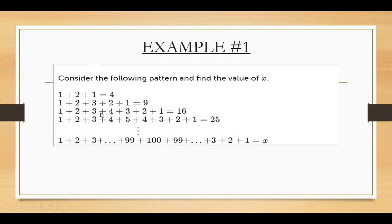Similarly, for the third line, the biggest number in the center is 4, so the square of 4 is 16. For the fourth line, the biggest number in the center is 5, so the square of 5 is 25. Now you can tell me easily — the biggest number in the line where we need to find x is 100.